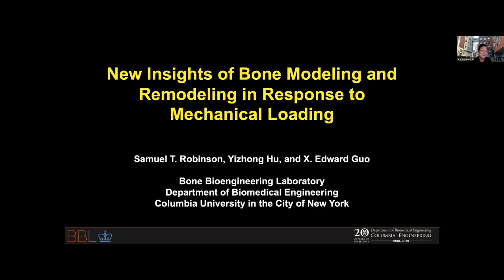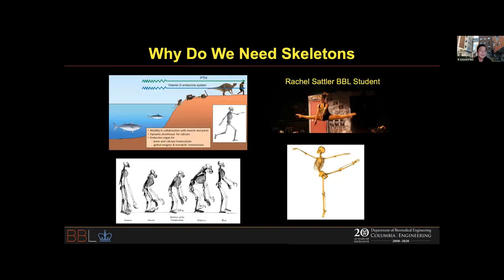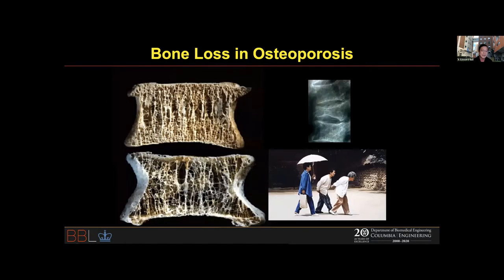Today I'm going to provide some new data we have looking at bone modeling and remodeling in response to mechanical loading. Bone is actually a very ancient organ — starting from fish, which have bones, and when fish crawled onto land, there was a lot of evolutionary process. With more gravity and the transition from primates to humans, bones became very important. Evolution is not complete, and that's getting us into a lot of trouble.